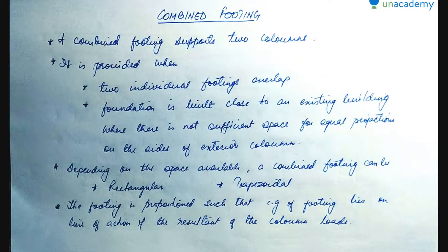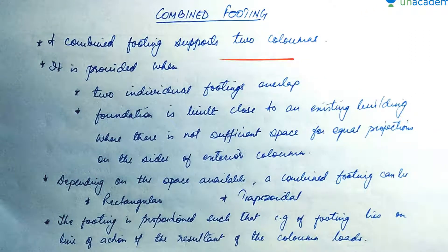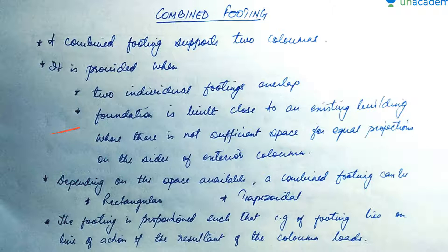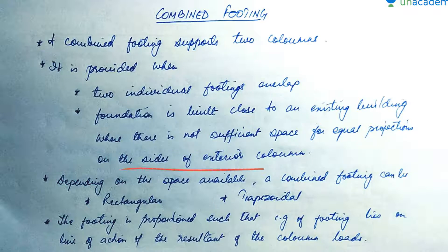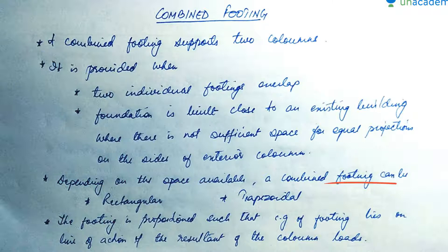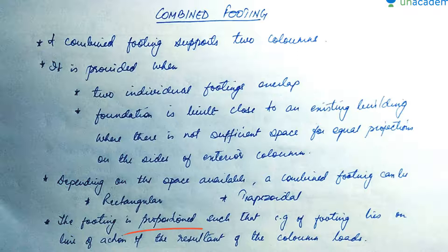A combined footing supports two columns. It is provided when two individual footings overlap, or it may be the case that the foundation is built close to an existing building where there is not sufficient space for equal projection on the sides. Depending upon the availability of space, a combined footing can be rectangular or trapezoidal. The footing is proportioned so that the center of gravity of the footing lies on the line of action of the resultant of the column loads.